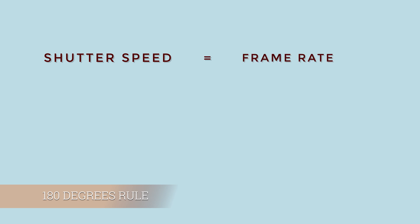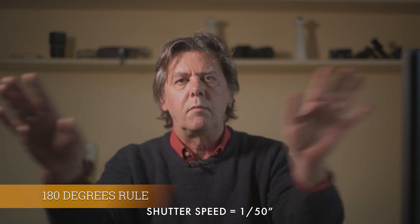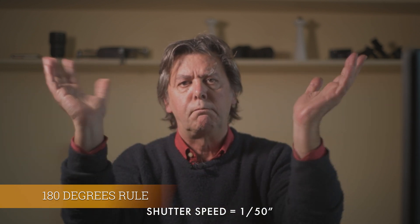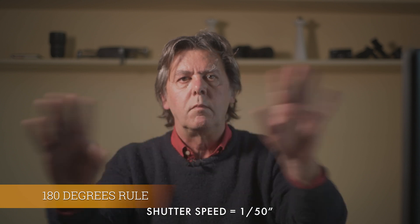In regular video, there is a general rule adopted across the industry called the 180 degrees rule. It consists in using a shutter speed of half the frame rate of the project. Since I use a frame rate of 24 frames per second, the optimal shutter speed to use in video, according to this rule, is 1/50th of a second or thereabout. This is in order to mimic what we see in real life with our eyes, by allowing a certain amount of motion blur in each frame.